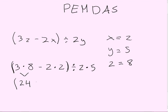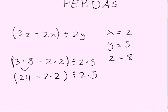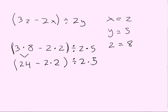Open parenthesis, 24 minus 2 times 2, close parenthesis, divided by 2 times 5. Okay, so now we still have a parenthesis, and we still have a multiplication problem, and so we will do 2 times 2, which is 4. And then we write the whole problem, 24 minus 4, parenthesis, divided by 2 times 5.